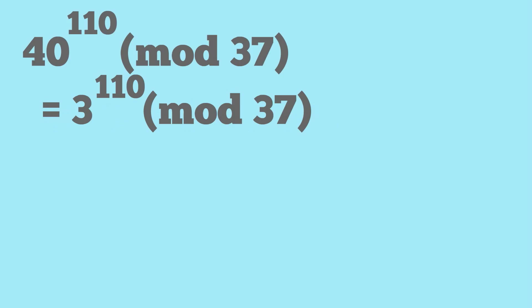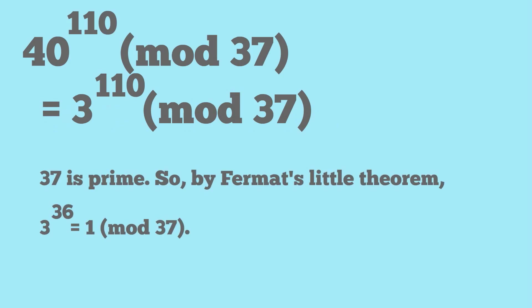So what we're going to use here, we recognize that 37 is a prime. And we know from Fermat's little theorem that if we take any number less than 37 to the power of 37, sorry, to the power of 36, we get 1.